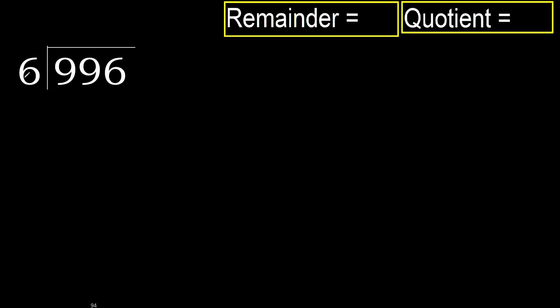996 divided by 6. 9 is not less, therefore with 9. 6 — multiply by which number is nearest to 9 but not greater.